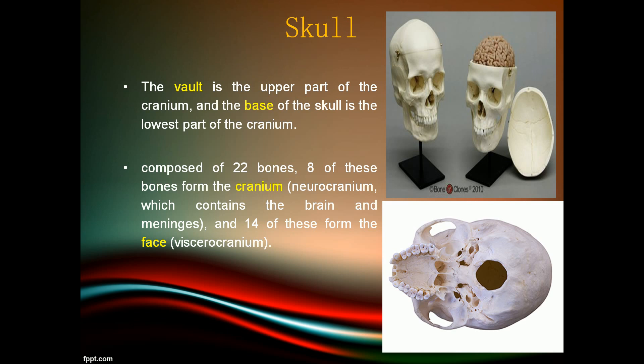The brain pan is the upper and back part of the skull which forms a protective case around the brain. The neurocranium includes the calvaria, that is the skull cap.